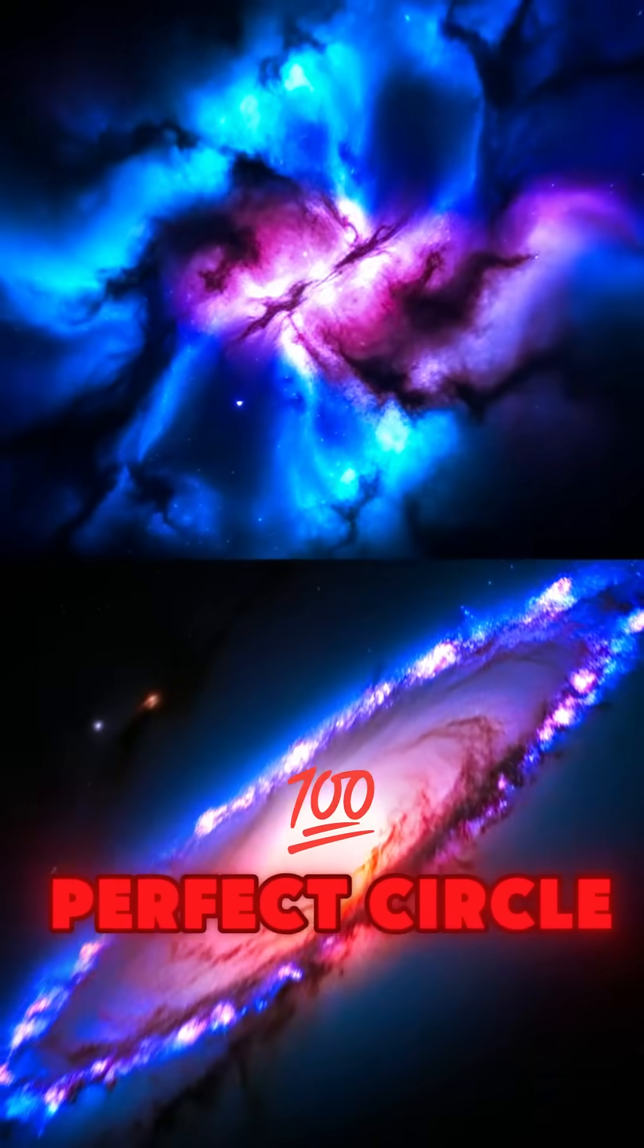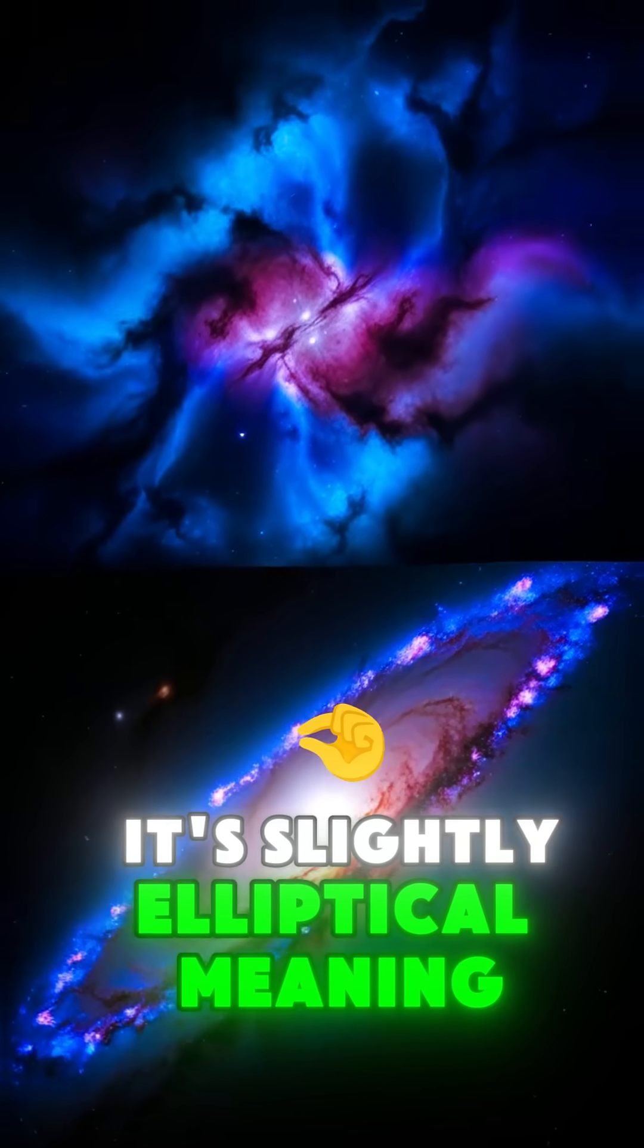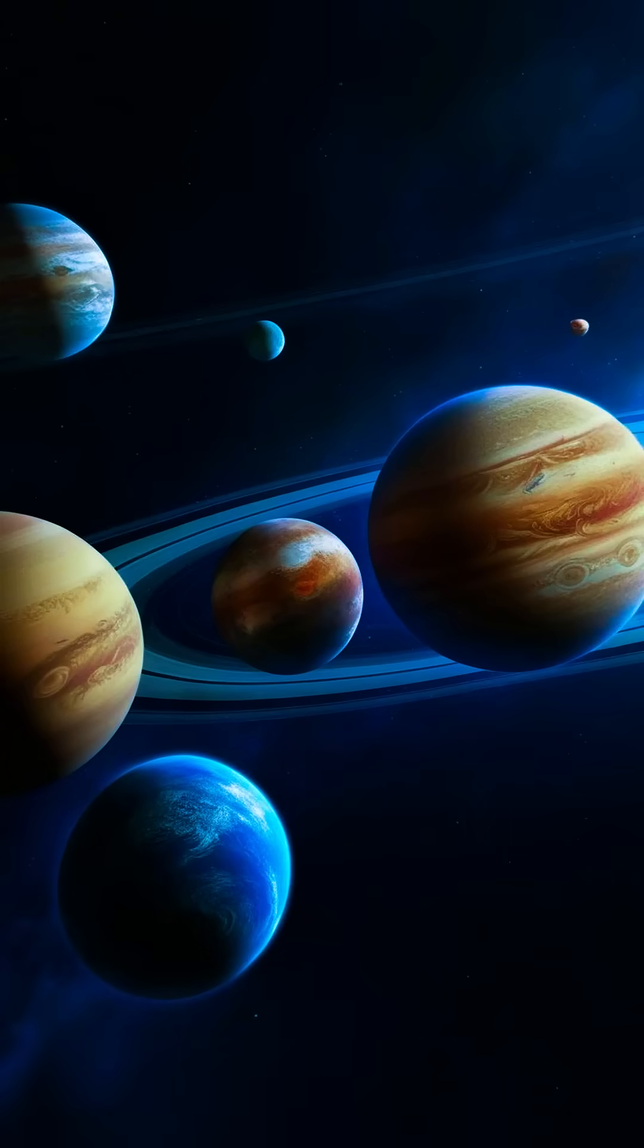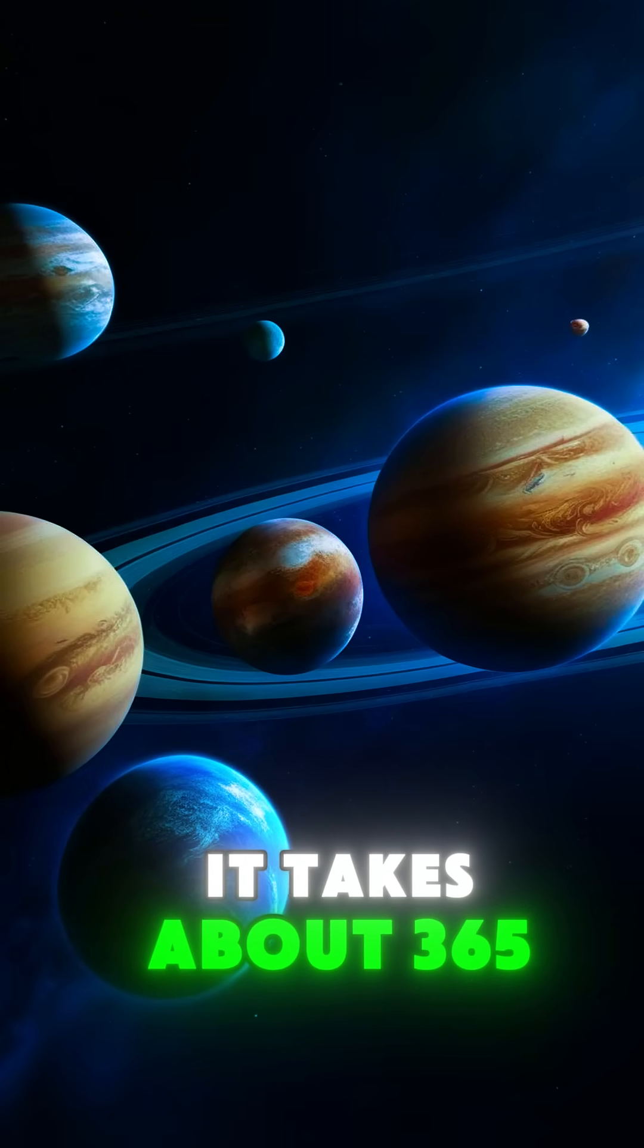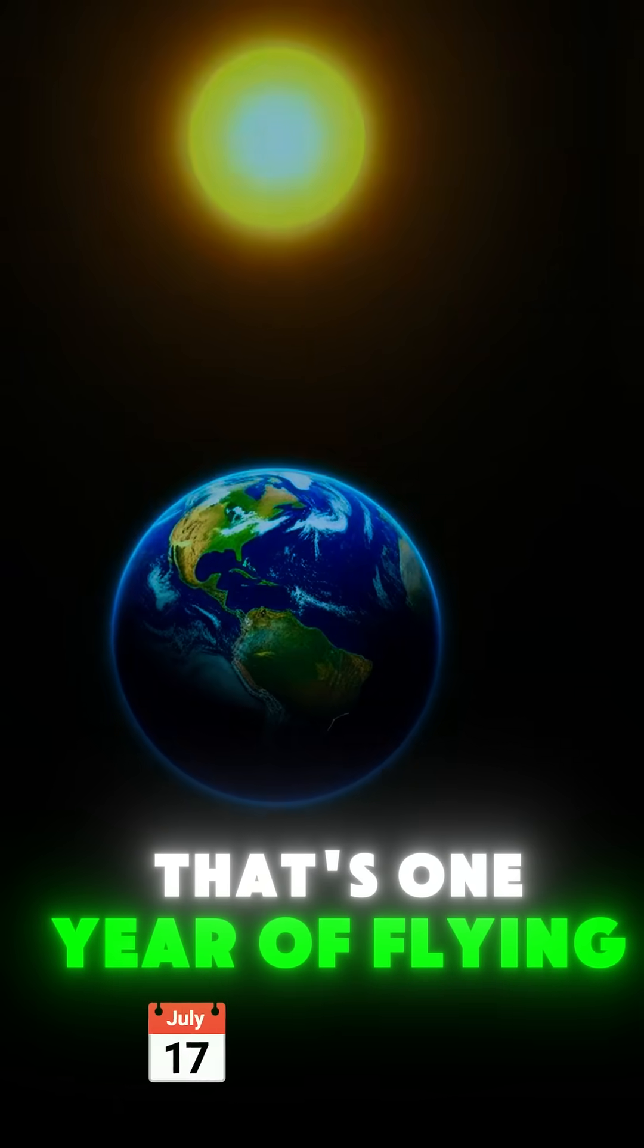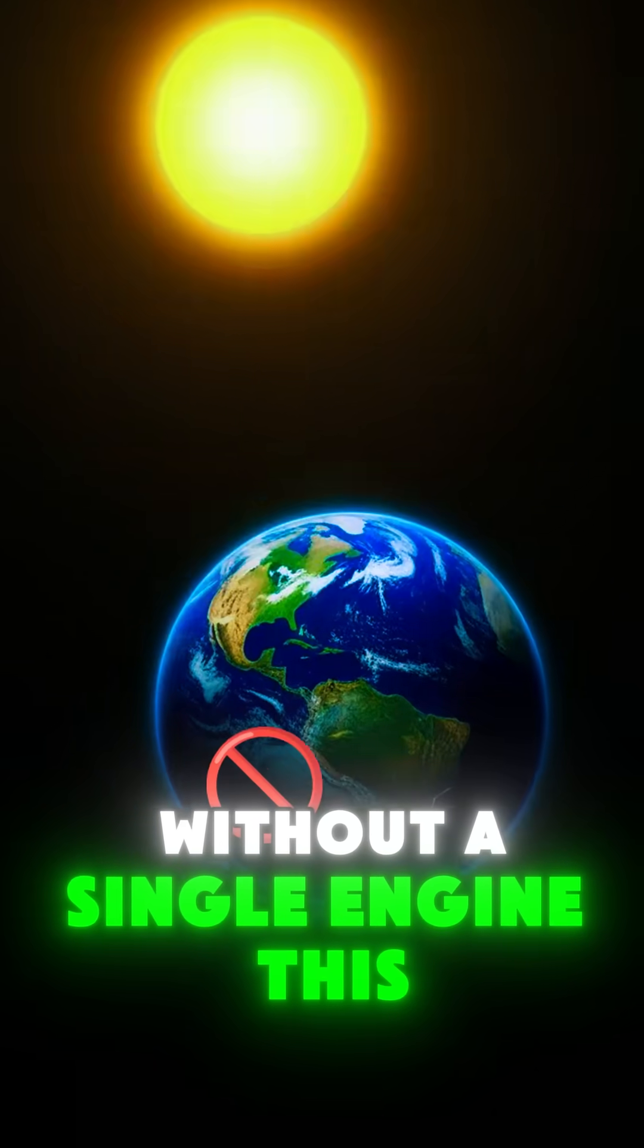Earth's orbit isn't a perfect circle. It's slightly elliptical, meaning we're sometimes a bit closer or farther from the sun. But on average, it takes about 365 days to complete one full loop. That's one year of flying through space without a single engine.